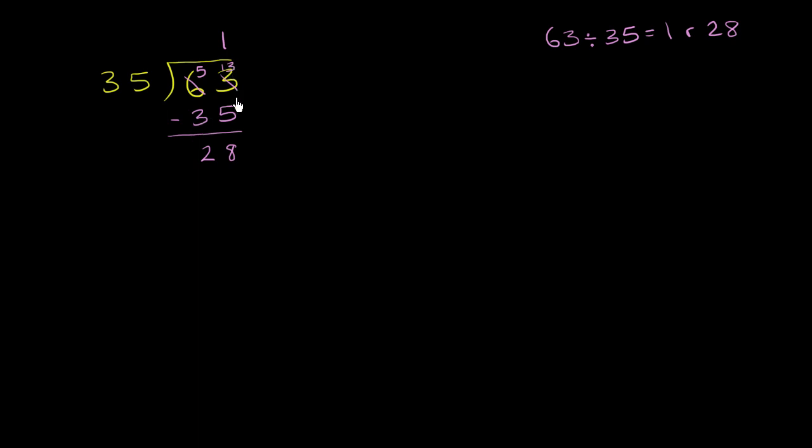And to do that, I essentially have to add a decimal here, and then just keep bringing down decimal places to the right of the decimal. So 63 is the exact same thing as 63.0, and I could add as many zeros as I might want to add here.